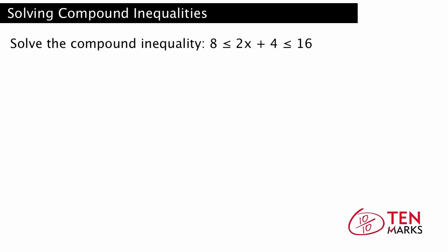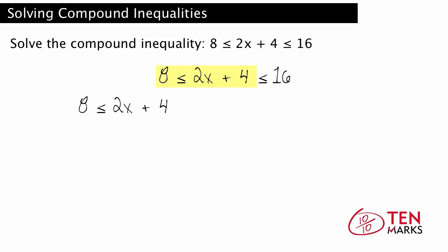Let's look at a compound inequality using an AND statement: 8 is less than or equal to 2x plus 4 is less than or equal to 16. This inequality has two inequality symbols around the variable expression 2x plus 4. Since both properties are true, you can rewrite this with AND: 8 is less than or equal to 2x plus 4 and 2x plus 4 is less than or equal to 16.